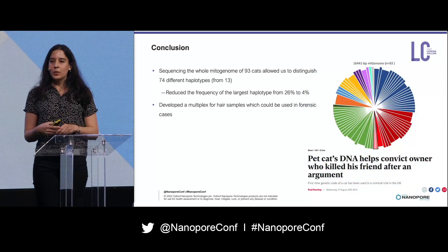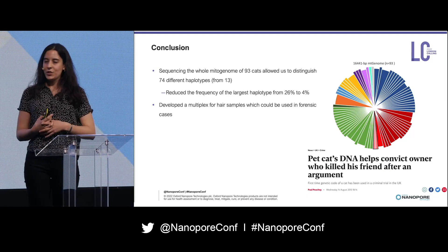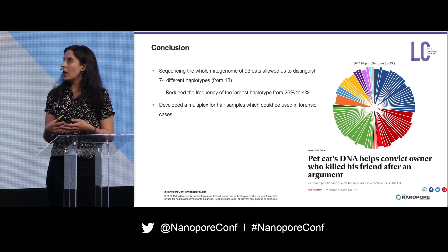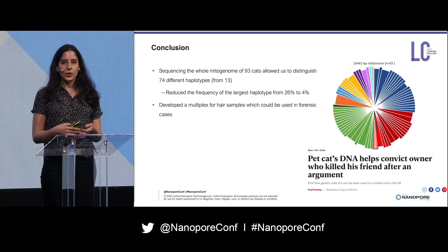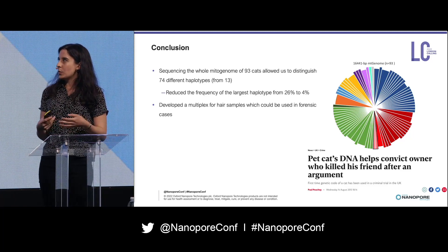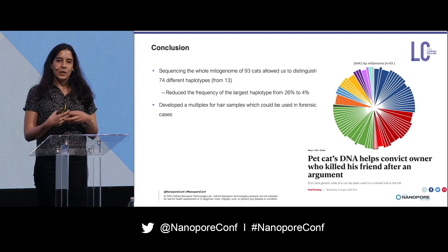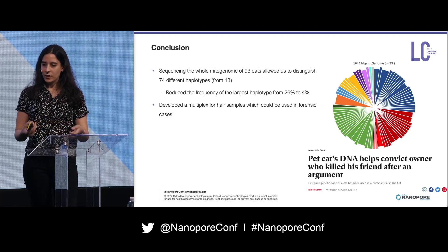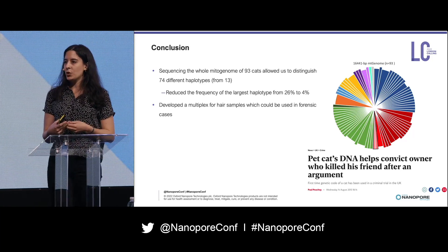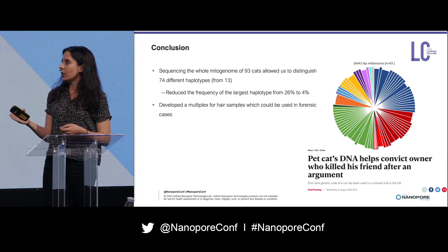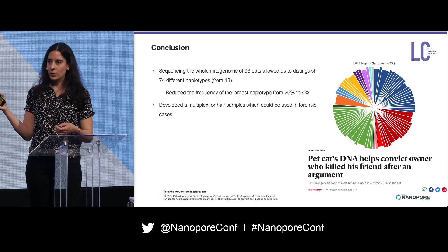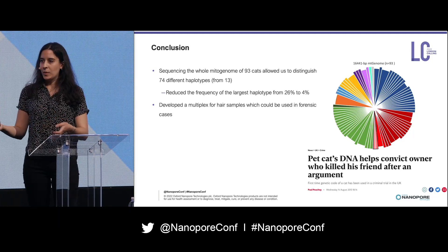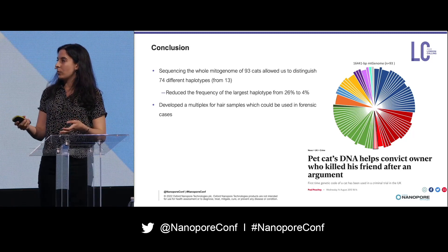Using nanopore sequencing, we sequenced the whole mitogenomes of 93 cats, which allowed us to distinguish 74 different haplotypes from 13 originally, and reduce the frequency of the most common haplotype from 26 to 4 percent. We developed a multiplex which can be used in forensic cases with degraded samples. In the 2012 murder case, even though they were lucky it was a rare profile, we would now be able to subdivide it even further — and in most cases, you would expect to achieve quite a rare profile.